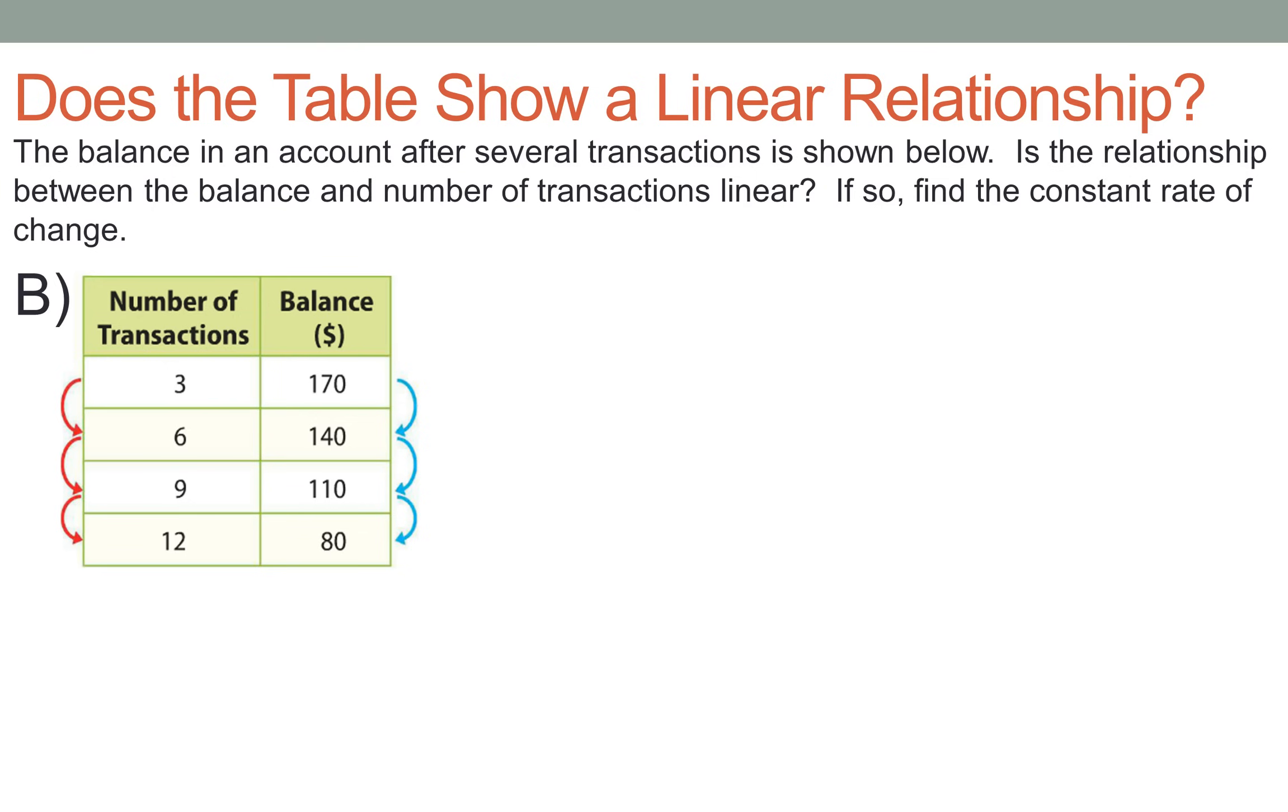And I know what you're doing. You're looking at the screen going like, yo, Mr. Hayne, there is no graph. So what do we got to do? We got to take a look at the number of transactions. And if I look at the red loops coming down on the left-hand side, I see that each one of those is adding three. And if I look at the blue loops coming down on the right-hand side of the table, each one of those is subtracting 30.